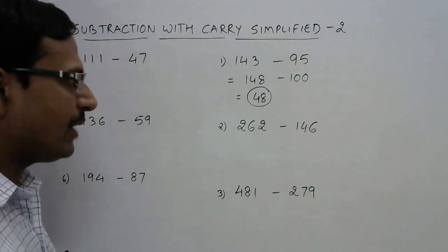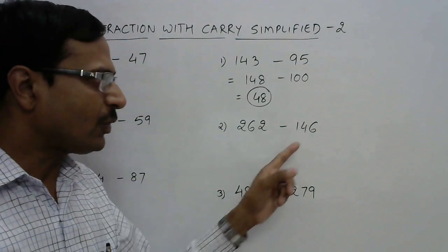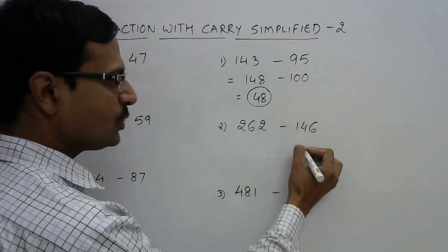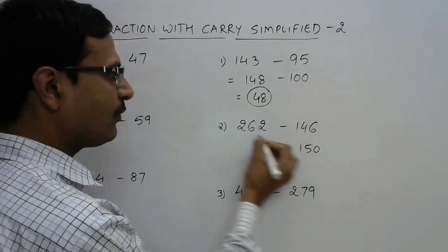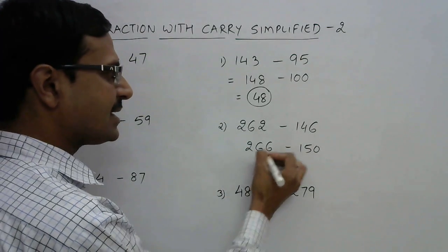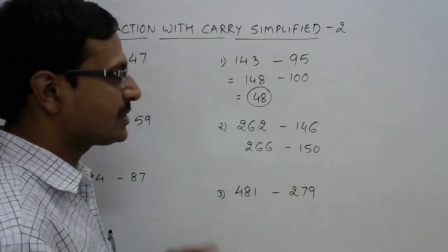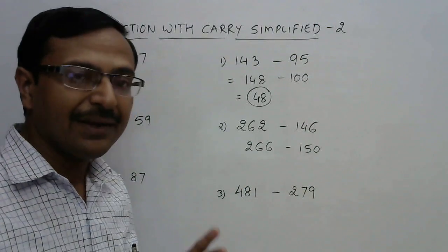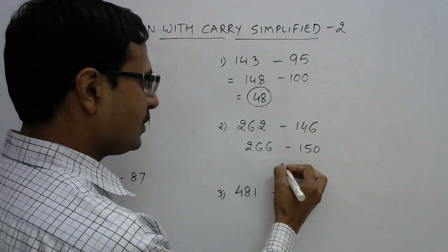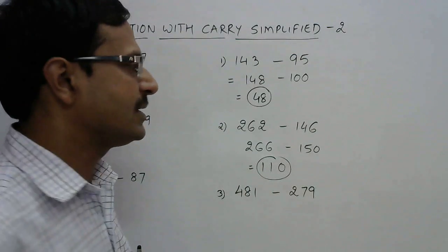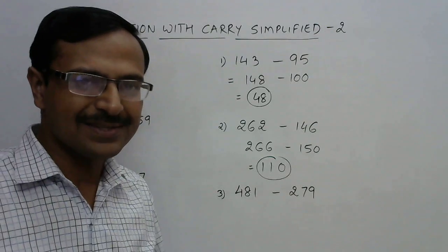Let's see 262 and 146. Now see, 146 is very close to 150, so if you add 4 to this you get 150. So add 4 to this you get 266. And now subtracting 266 and 150 should be easy because it does not involve any carries. So 110 is the answer for this question. So no carries, no worries.